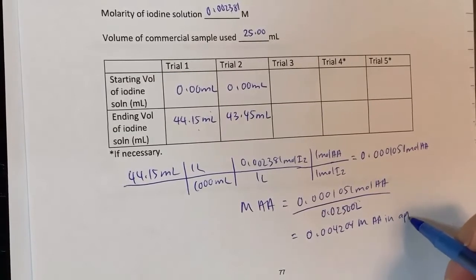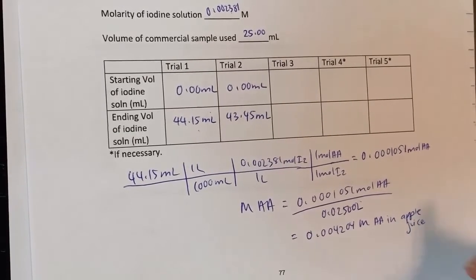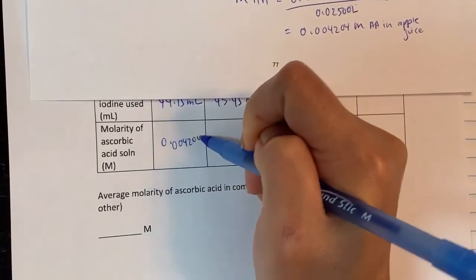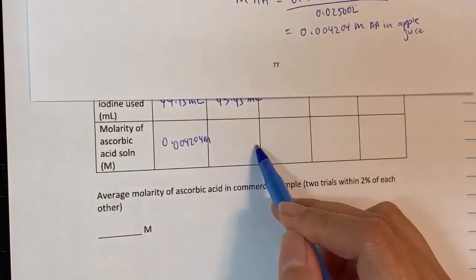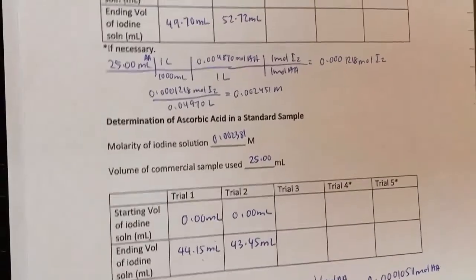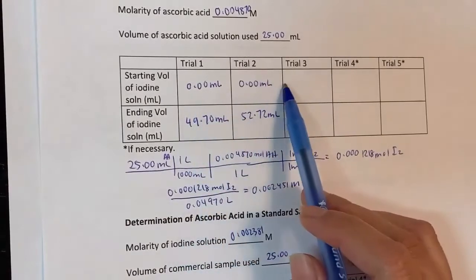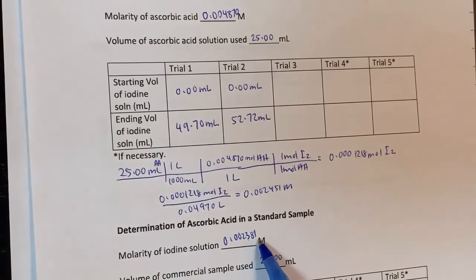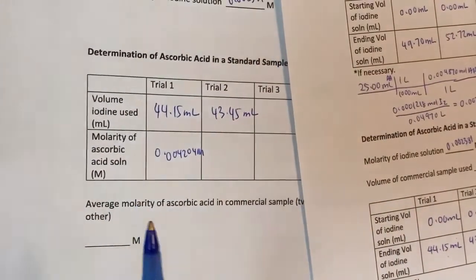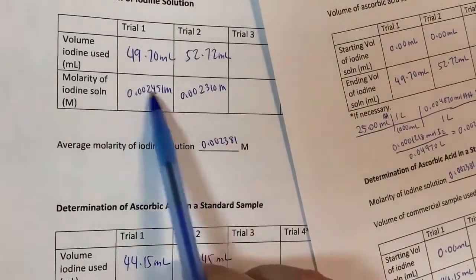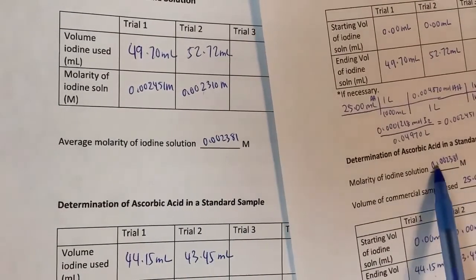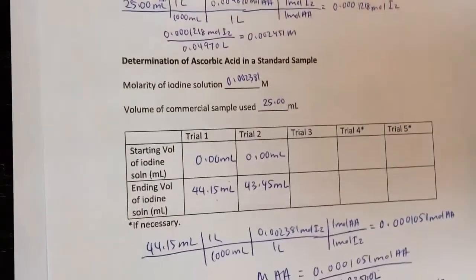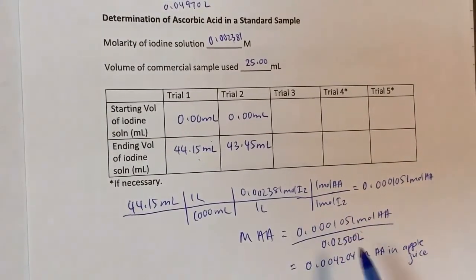That value goes right in the apple juice commercial sample table. You do the same calculation for trials two and three, take the average of all three, and plug that average back into the front page. It's a simple experiment with simple calculations — just make sure you remember the second part is worked differently from the first part.